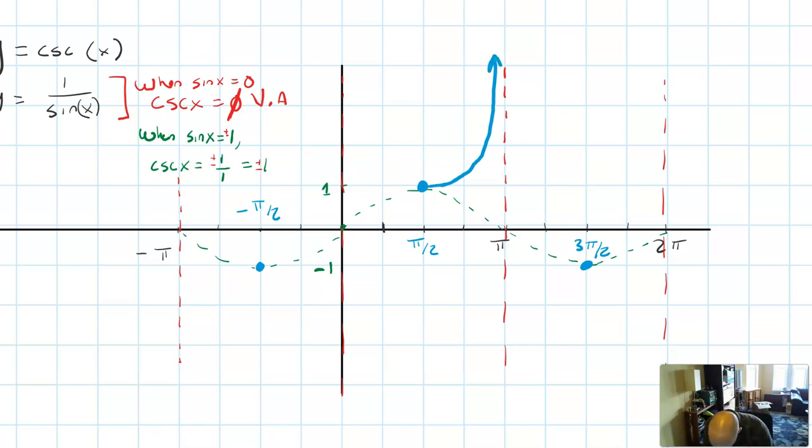Why is that true? Because right here, sine x is approaching zero. So 1 over sine x is gonna approach 1 over 0, which approaches positive infinity. So that's why this goes up to positive infinity.